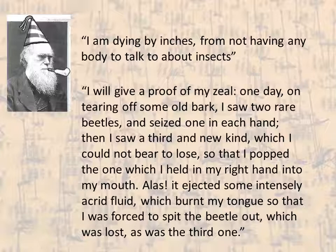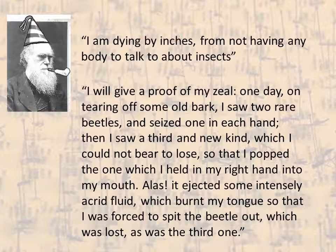Darwin had quite a lot to say about insects in some parts of his life. He wrote a whole book later in his life about the pollination of flowers, which talked a lot about pollinating insects. But much earlier in his life, especially when he was a student at Cambridge — a theology student as it turns out — he was a very avid beetle collector. We have a letter from Darwin to one of his relatives complaining that he doesn't have enough people to talk about insects, not surprising given that he was supposed to be studying theology at the time.